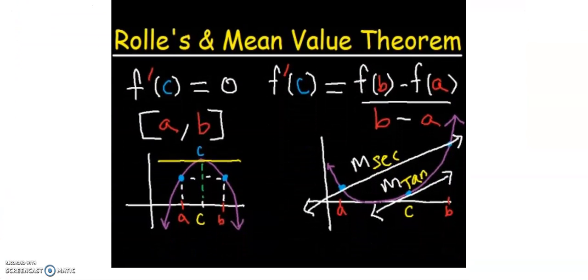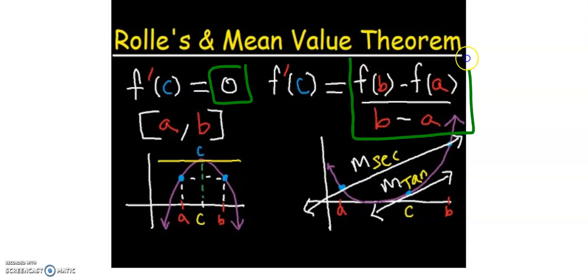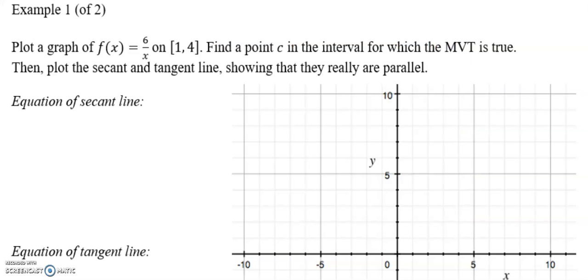Here we go. Nice visual for you, Rolle's theorem, remember f'(c) ends up being equal to zero. It's a very specific case, whereas the mean value theorem, f'(c) is equal to whatever that slope of the secant line is of the endpoints. All right, so let's try one.